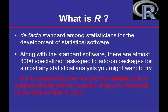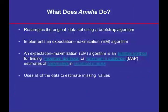The Amelia package was developed by Hanuker, King, and Blackwell, and was revised in 2013 for what is now referred to as Amelia 2. Amelia, named after Amelia Earhart as a symbol of missingness, resamples the original data using a bootstrap algorithm. It implements an expectation-maximization algorithm — an iterative method for finding maximum likelihood or maximum a posteriori estimates of parameters in statistical models. Amelia uses all of the data to estimate missing values.